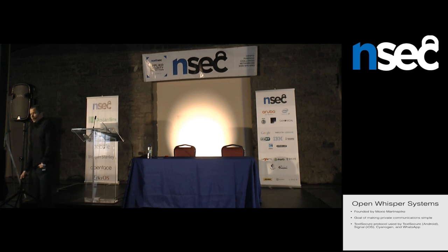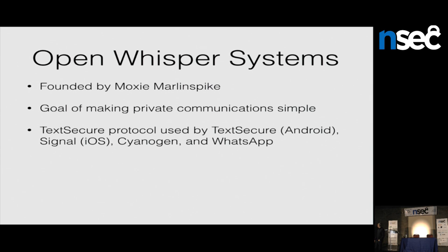I'll start with some background about Whisper Systems. It's an open source project founded by Moxie Marlinspike with the goal of making private communications simple and ubiquitous. The main focus of Whisper Systems is the TextSecure protocol, used by our own apps — Signal for iOS and TextSecure for Android — as well as systems like Cyanogen and WhatsApp. We'd love to make it a more widely supported standard for secure and encrypted messaging.